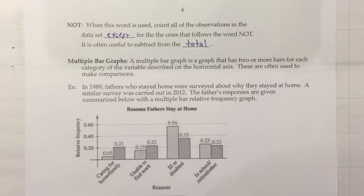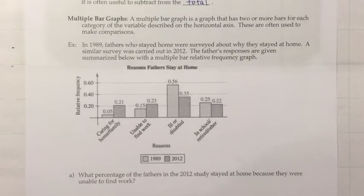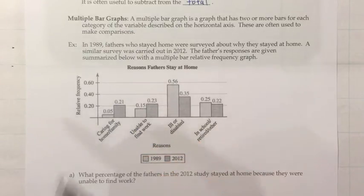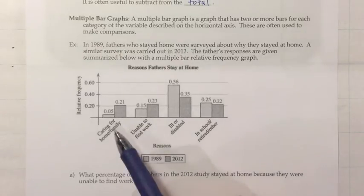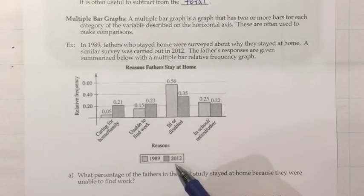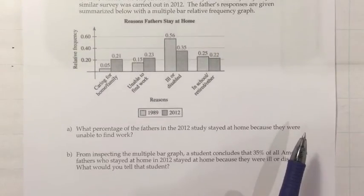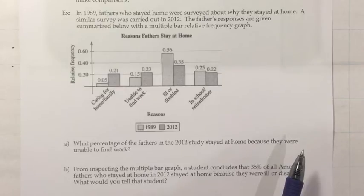Another situation we can look at with bar graphs is multiple bar graphs. A multiple bar graph has two or more bars for each category of the variable on the horizontal axis, and these are often used to make comparisons. In 1989, fathers who stayed home were surveyed about why they stayed at home, and a similar survey was carried out in 2012. The fathers' responses are summarized in a multiple bar relative frequency graph, with one bar for 1989 and one for 2012.